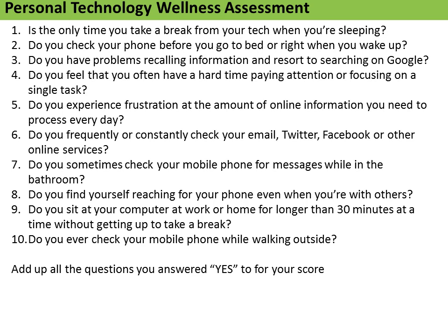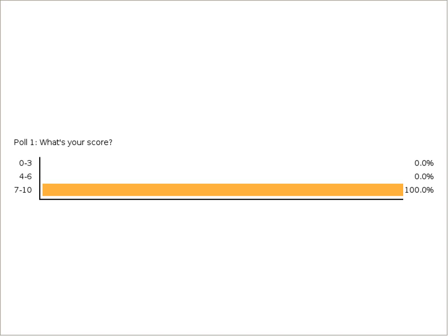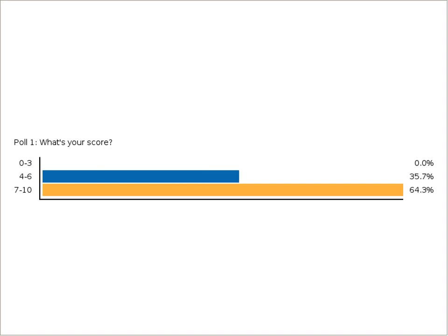We will give you a second to add up your scores — count up the number of yeses to these 10 or 11 questions with the bonus. Once you have your number, let us know whether you scored between 0 and 3, 4 to 6, or 7 to 10. There is no shame in any of these answers. Someone has self-admitted in the chat that they were at 11. I know what my score was — I was an eight.